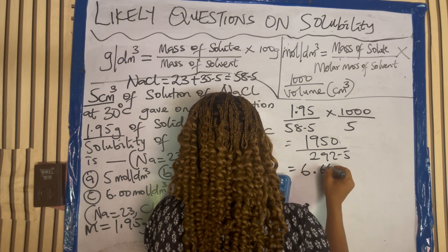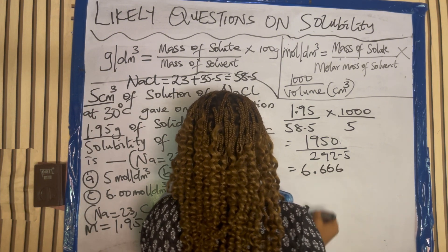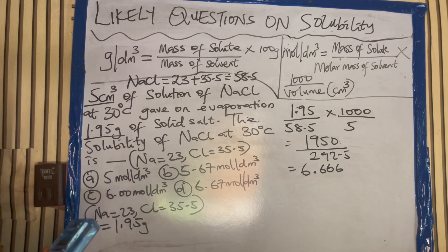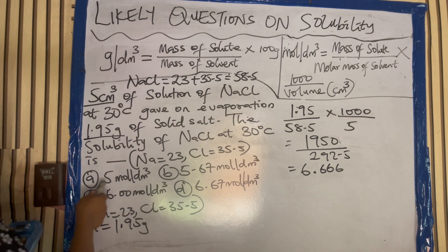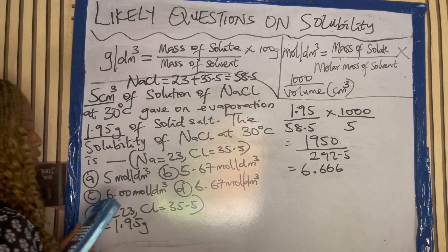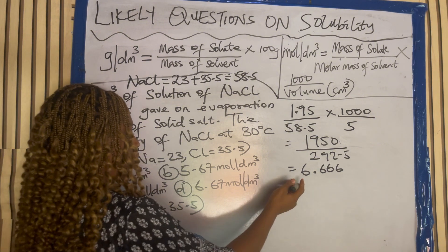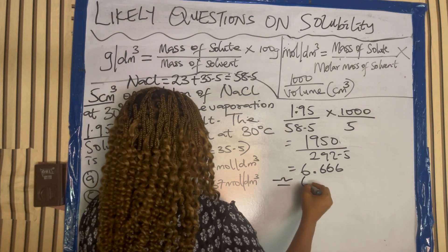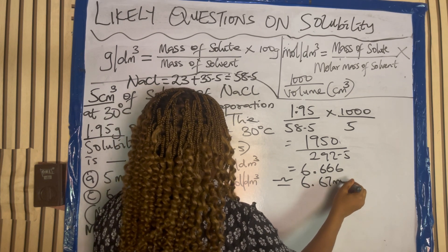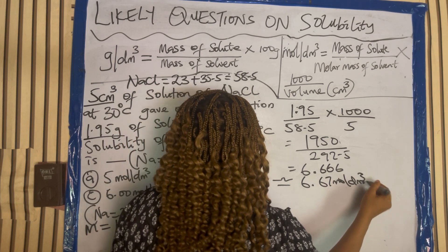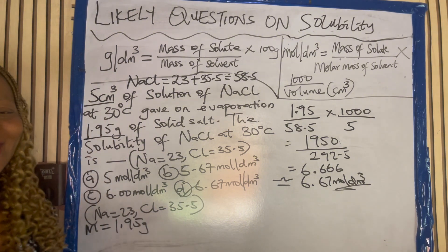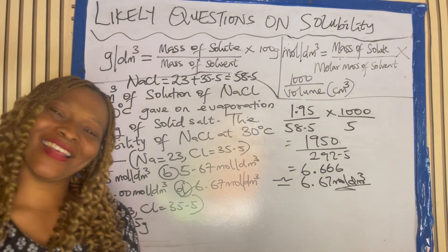That gives us 6.6666. From the options given here — 5 mole per dm cube, 5.67, 6.00, 6.67 — this is approximately 6.67 mole per dm cube. So the answer to the question is D. Isn't that simple?